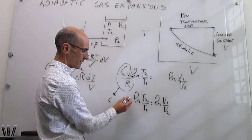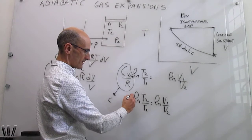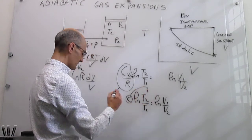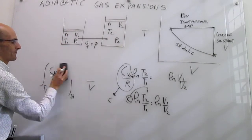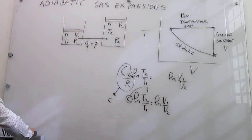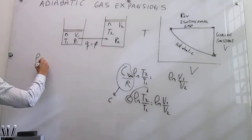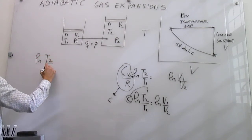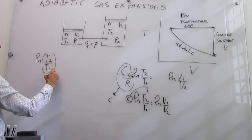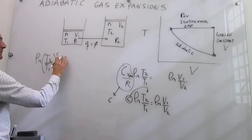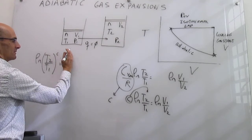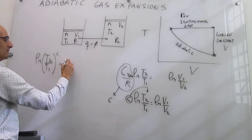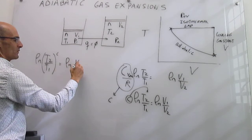Using the properties of the logarithms, we can bring this constant inside of the logarithm. So I'm going to write it here: natural log of T2 over T1 to the power of c is equal to natural log of V1 over V2.